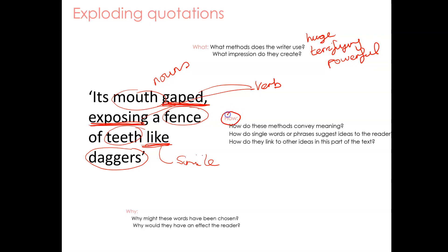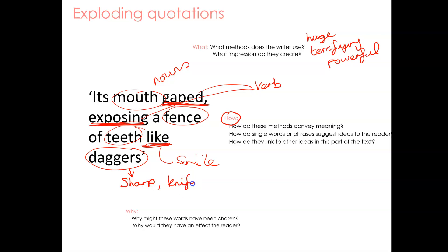I now need to go for the How. How do I know this? Let's start with that simile. The simile is 'teeth like daggers.' Let's zoom in on the noun 'daggers.' Literally, what is it? A dagger is something sharp — it is effectively a knife, a weapon — and therefore it has connotations of danger. This is something threatening; it could potentially kill.